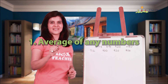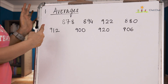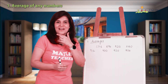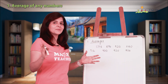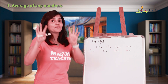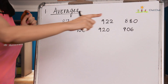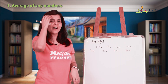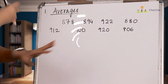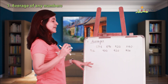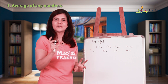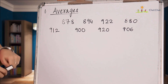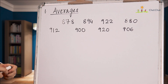The first trick is for averages. Sometimes we get these kinds of questions in our exams — huge, big numbers and we're supposed to calculate the average. The official way is to add up all the numbers and divide by the count of numbers. But here's a shortcut: take a look at these numbers and pick a value you think is somewhere in between. With these eight numbers, I think 900 could be somewhere in the middle.